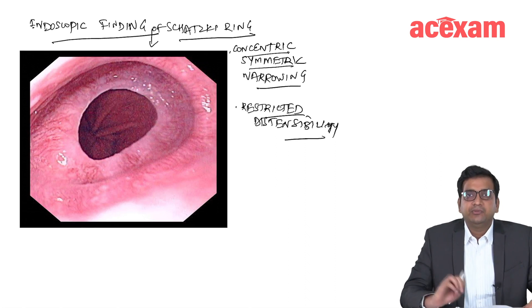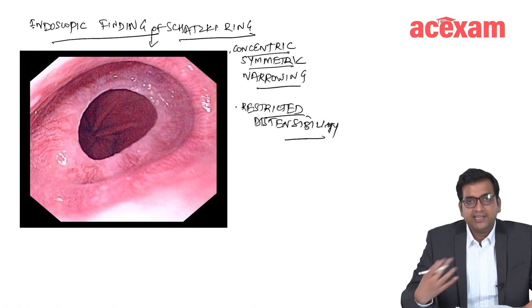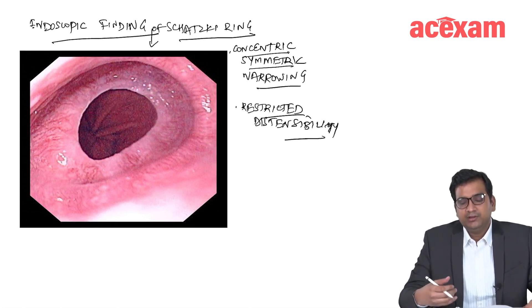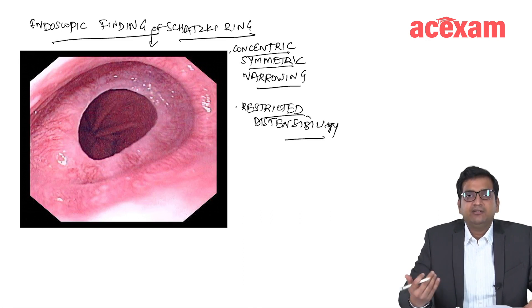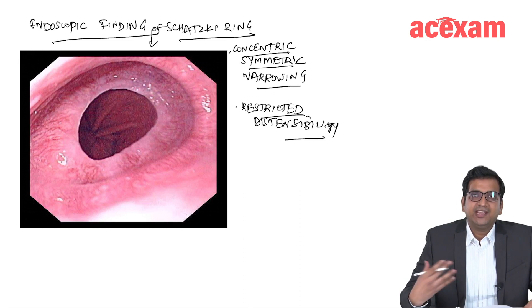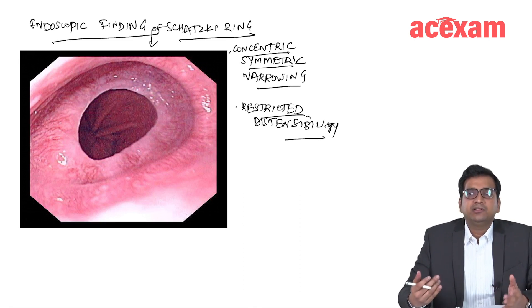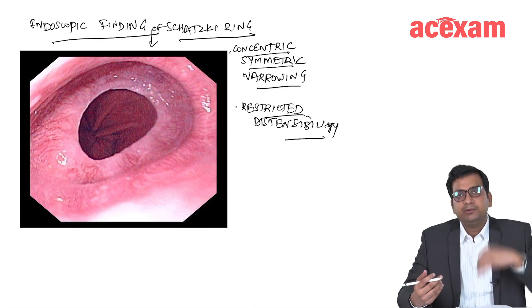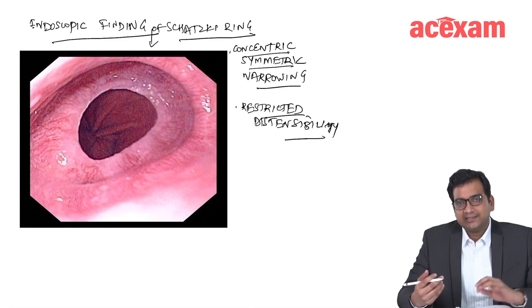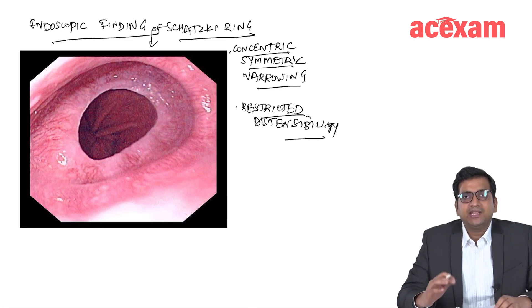A person will be able to take liquids well but whenever a person is taking solid food, then he might develop dysphagia and occasionally there will be episodic aphagia also where there will be a sudden impaction of the food bolus or some large piece of meat or some non-vegetarian food, and this will be known as episodic aphagia.